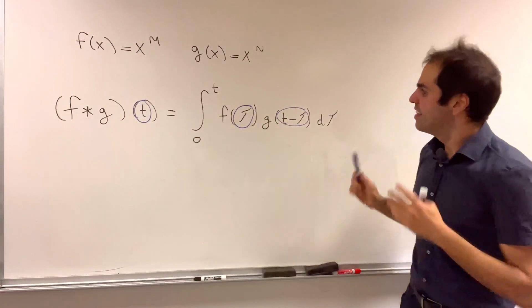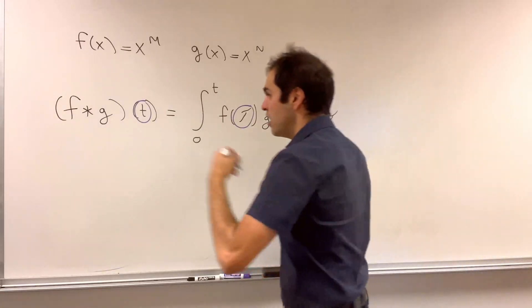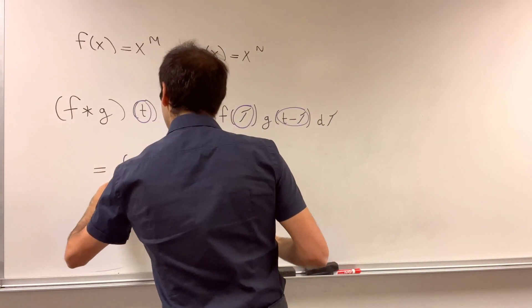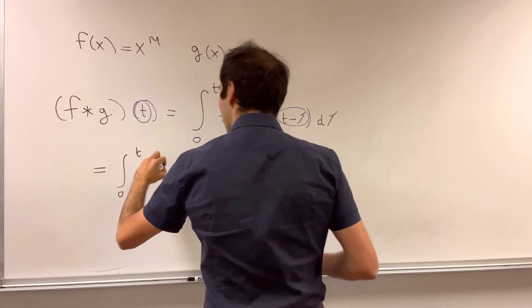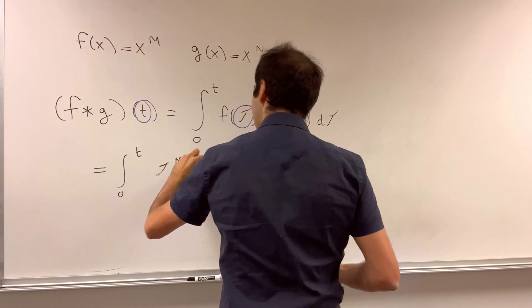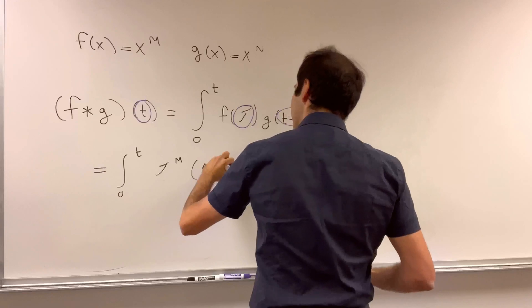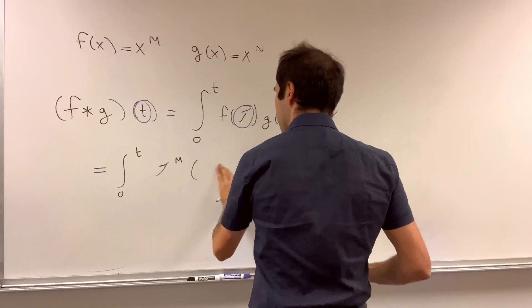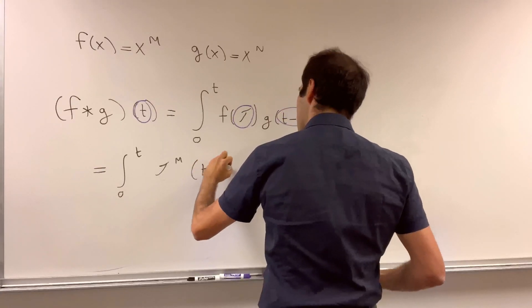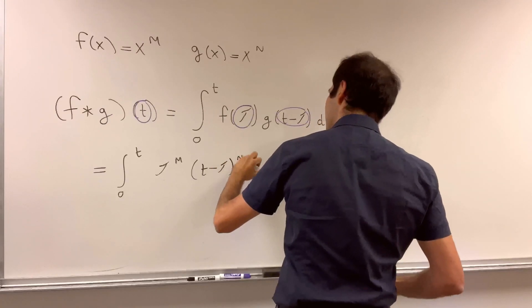Also tau like Terence Tao, really cool. So, in this case, what this becomes is integral from 0 to t of tau to the m, t minus tau to the n, d tau.